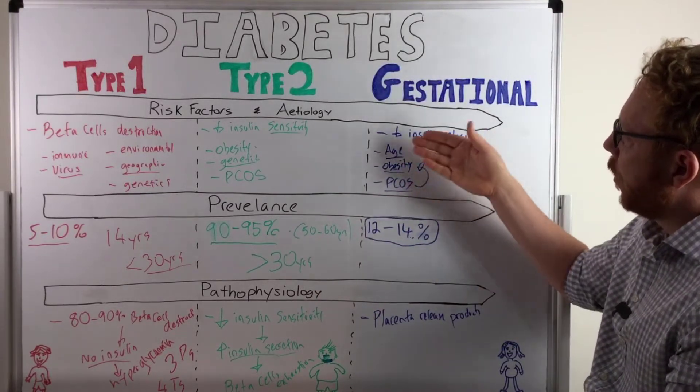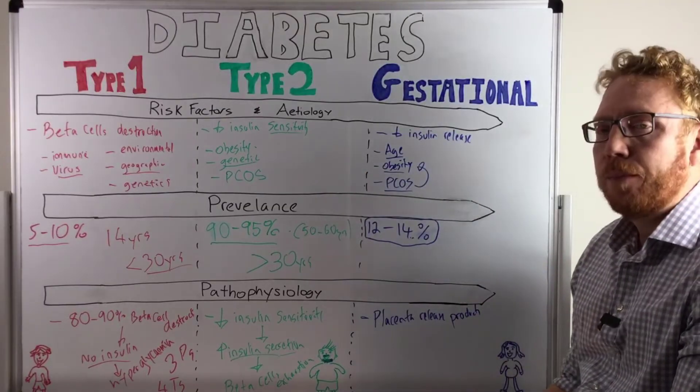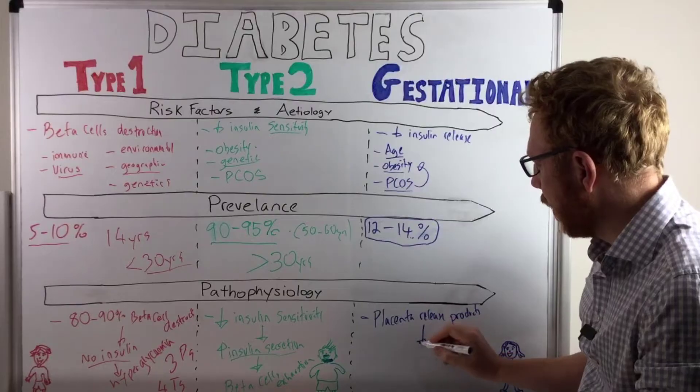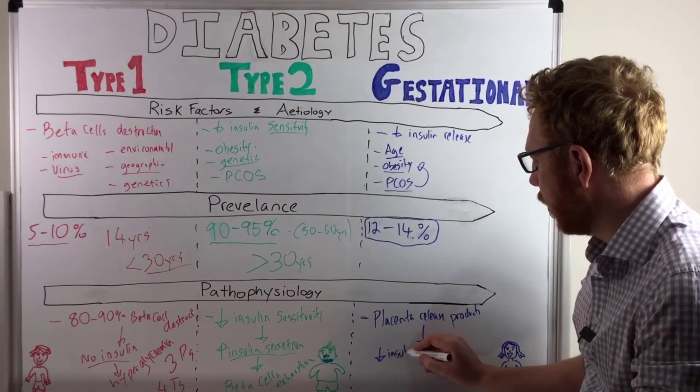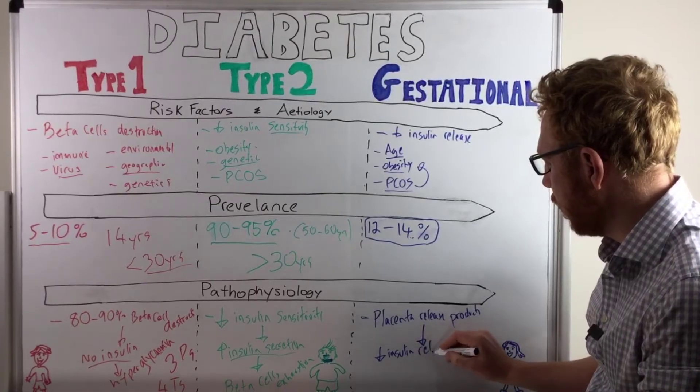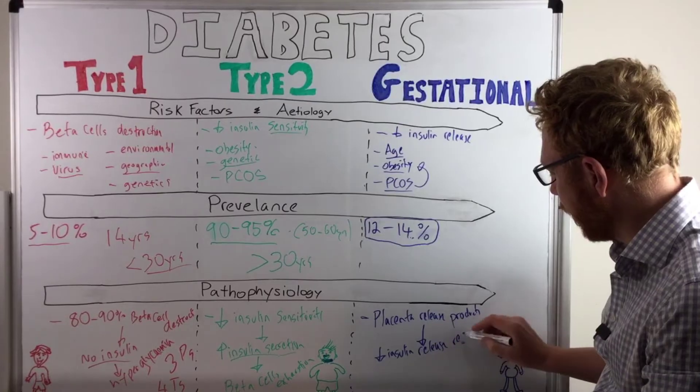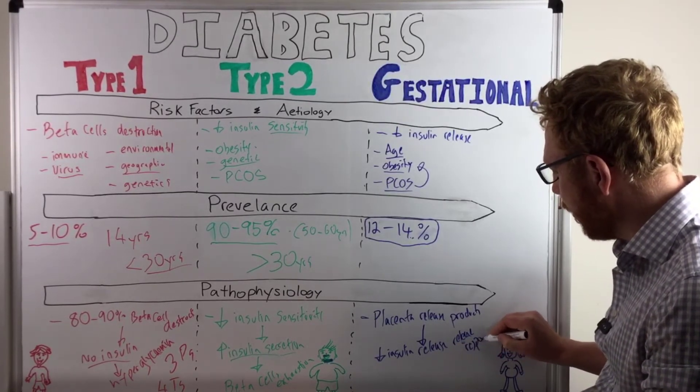But in these individuals, because they're predisposed to issues with the insulin release at the beta cell level, they don't release enough insulin. So they actually have reduced insulin release response at the pancreas level.